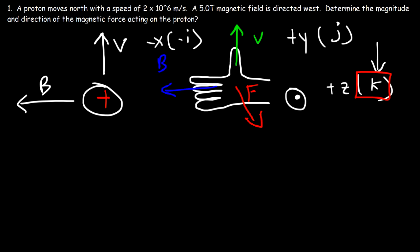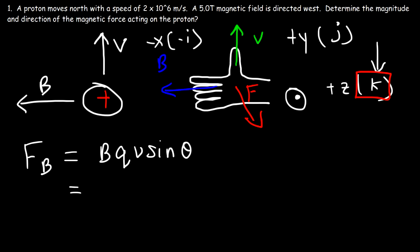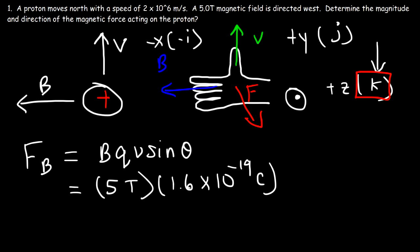Now that we have the direction, let's calculate the magnitude of the magnetic force. The formula is F = BQV sinθ. B is 5 Tesla, Q is the charge of the proton which is 1.6×10⁻¹⁹ coulombs. For an electron it's −1.6×10⁻¹⁹ coulombs, so for an electron the magnetic force would be directed into the page — the opposite direction — because of the negative sign.